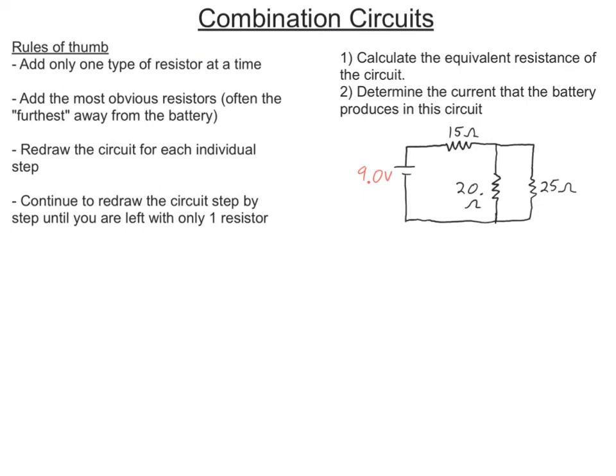Start with the most obvious, and as you go through, add the most obvious. Redraw the circuit for each individual step. That might feel very cumbersome, but it's actually going to make your life so much easier and prevent very simple mistakes. Continue to redraw the circuit step by step until you're left with only one resistor.